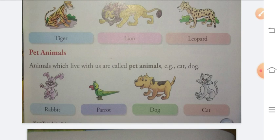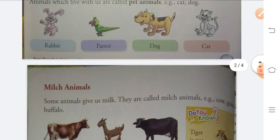Next is pet animals. Animals which live with us are called pet animals. For example, cat, dog, parrot, and rabbit. These are examples of pet animals because they live with us.